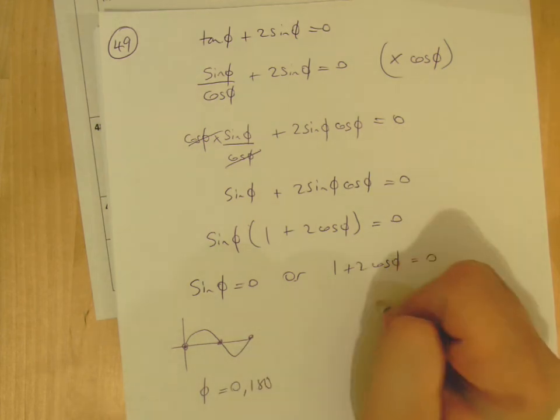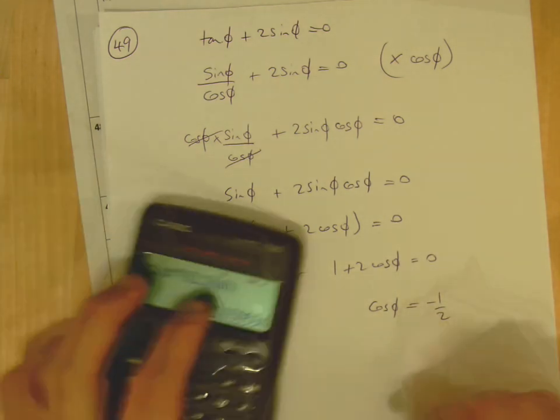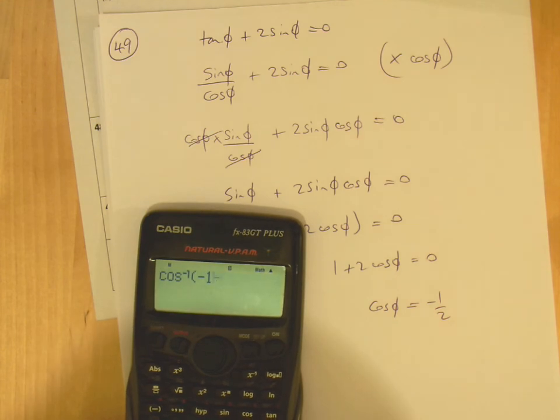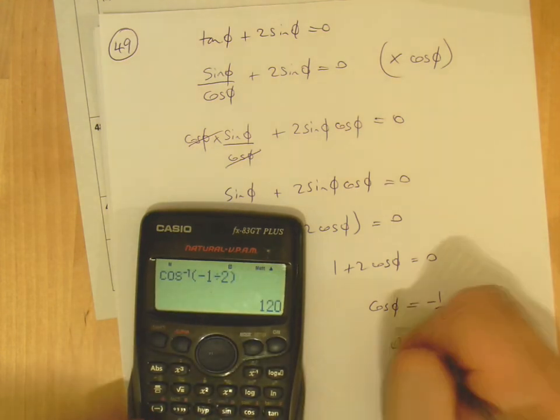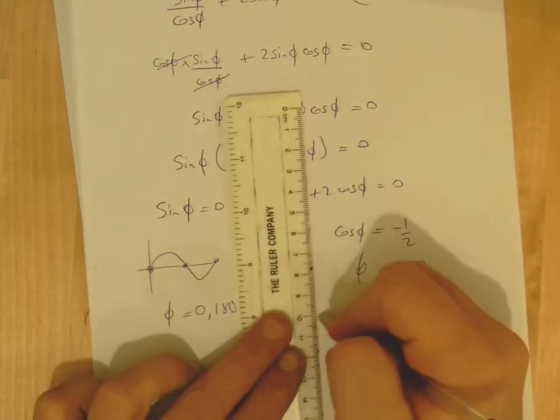For the second one, cos φ = -1/2. Using a calculator, φ is 120. Now I need to draw the cos graph to get this done properly.